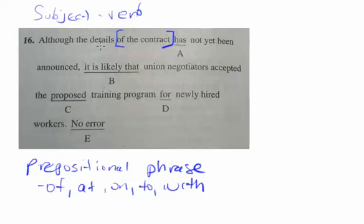Notice that it's between a noun — the word 'details' — and a verb — the word 'has.' We especially want to check these out when there's an underlined verb. We want to ask: what is its subject? If we see one of these prepositional phrases sitting there, we can actually cross them out because they're not essential.